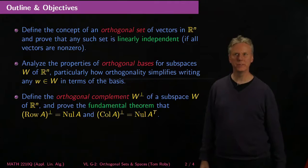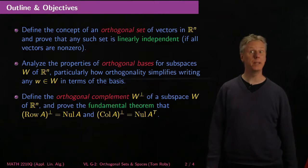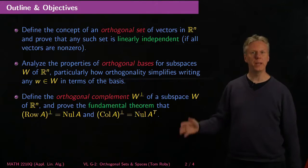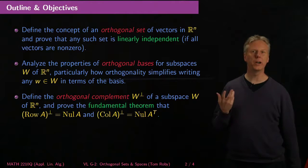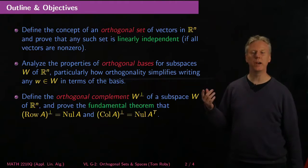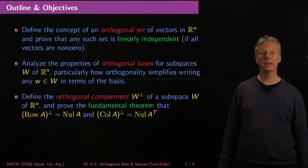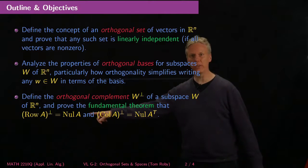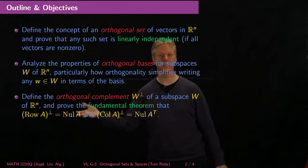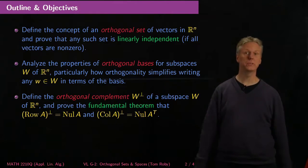Here's the outline and objectives. We'll define the concept of an orthogonal set of vectors in R to the n and prove that any such set is linearly independent if all the vectors are non-zero. We'll analyze the properties of orthogonal bases for subspaces W of R to the n, and in particular, how orthogonality simplifies writing any vector in W in terms of the basis. Finally, we'll define the orthogonal complement W-perp of a subspace W, and prove the fundamental theorem that the row space of A is the orthogonal complement of the null space of A. The null space of A is also the orthogonal complement of the row space of A, and similarly the orthogonal complement of the column space of A is the null space of A transpose, and vice versa.